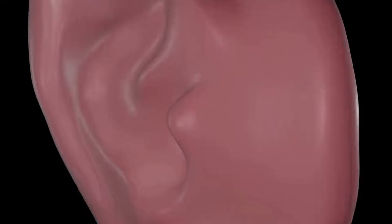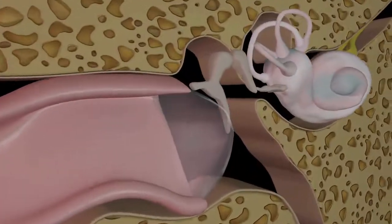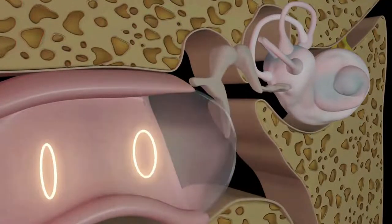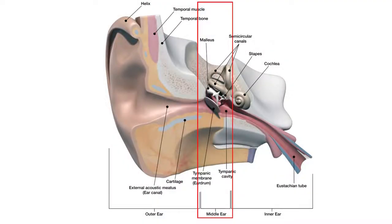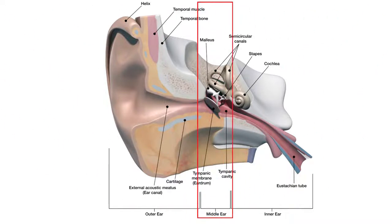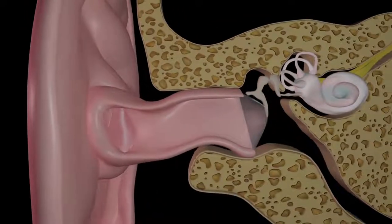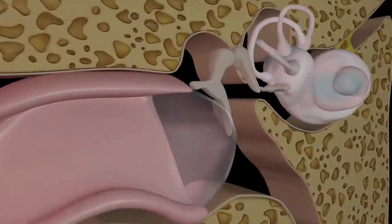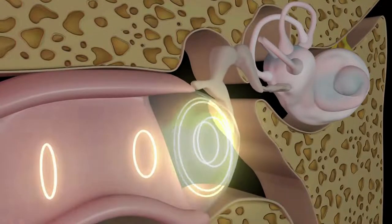The outer ear is composed of the visible part of the ear, also known as the pinna or auricle, and the ear canal. The middle ear contains the eardrum and three small bones known as ossicles, which are involved in amplifying the sound waves before they reach the cochlea in the inner ear. The eardrum is the membrane involved in the amplification of sound waves traveling through the ear canal, and it separates the outer ear from the inner ear.